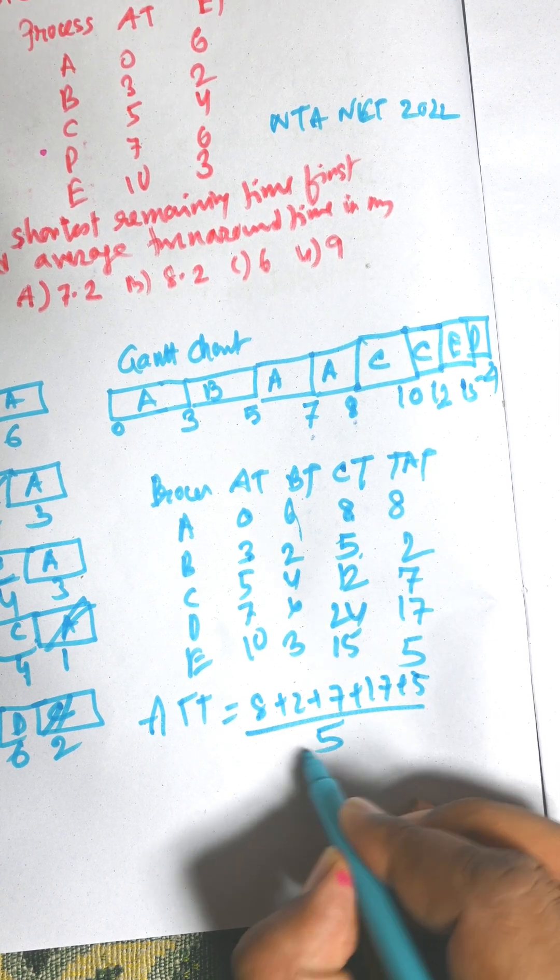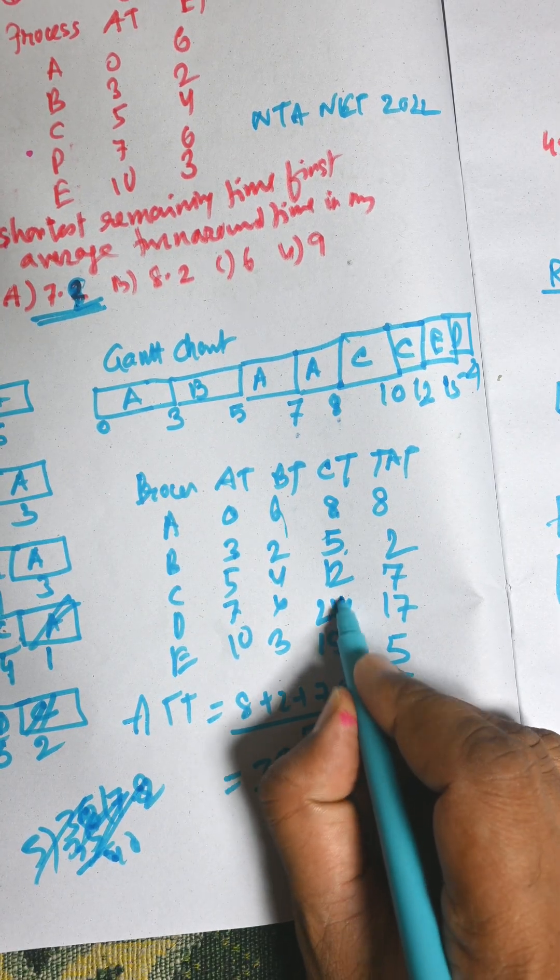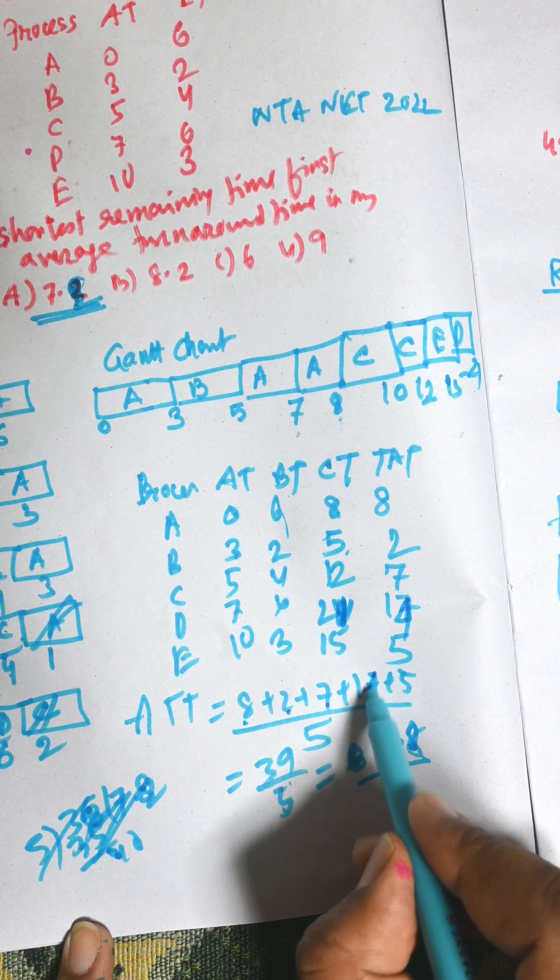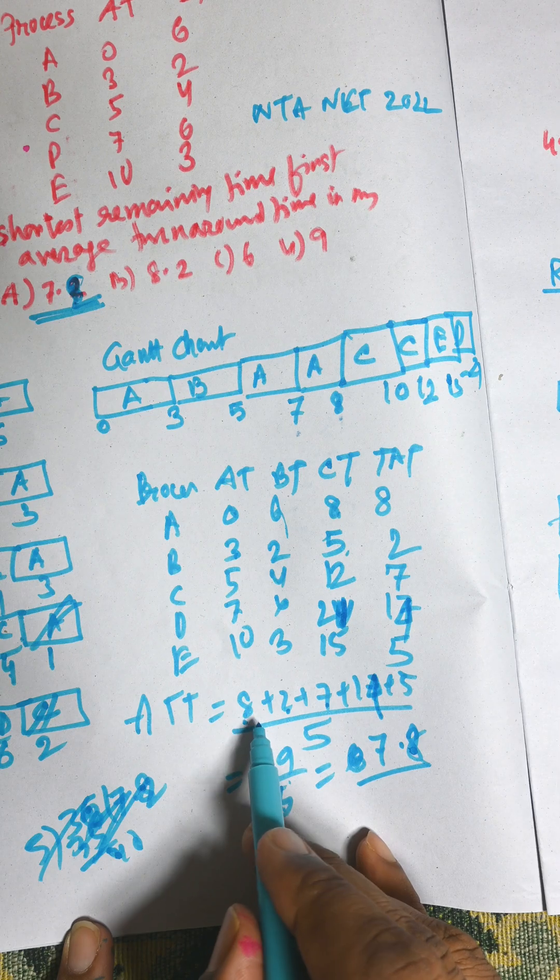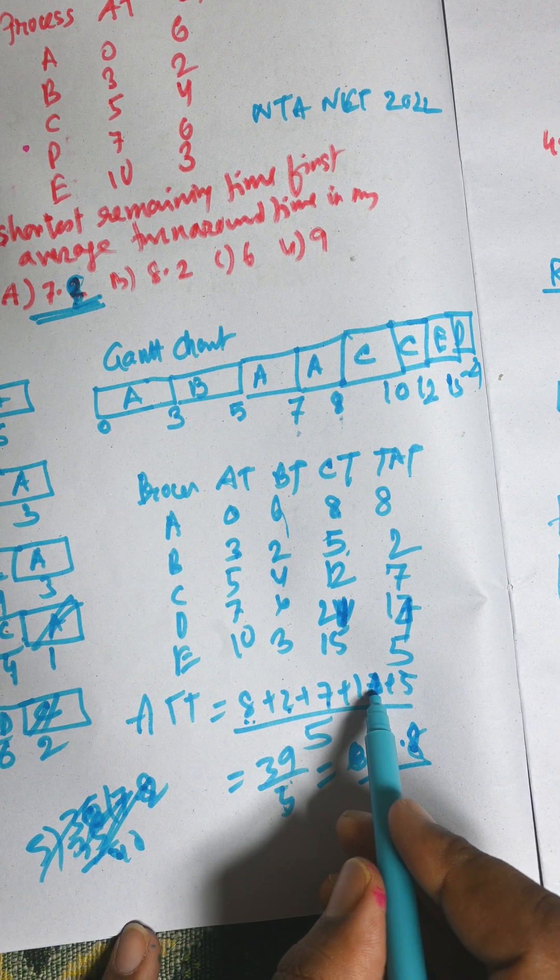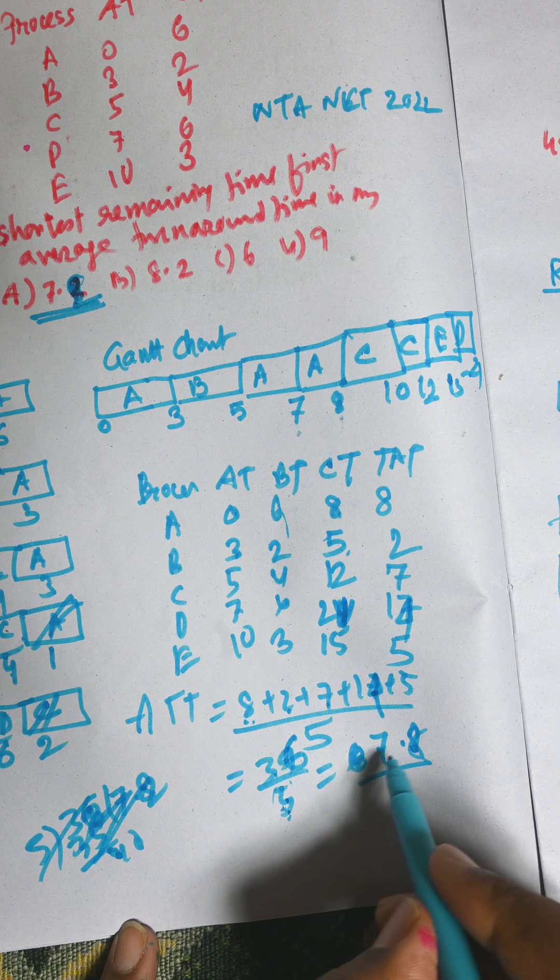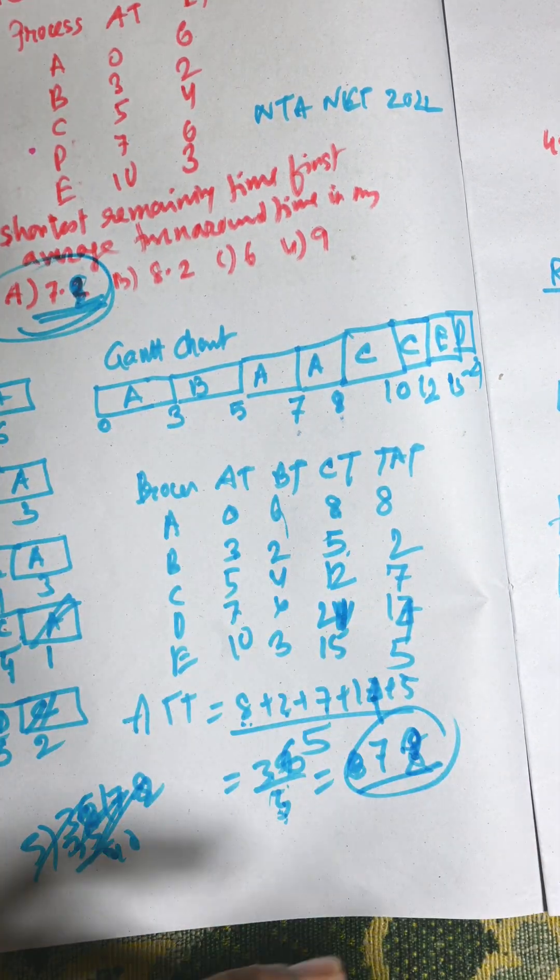The completion of D is 21. Turnaround time is 21 minus 7, that is equal to 14. And 15 minus 10 is 5. So 8 plus 2 plus 7 plus 14 plus 5 divided by 5. That is 36 divided by 5, that is 7.2. So the right answer is 7.2.